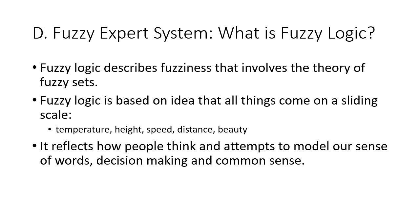First of all, let's describe what exactly is fuzzy logic. Fuzzy logic is a mathematical theory that describes fuzziness and involves the theory of fuzzy sets. Fuzzy logic is based on the idea that all things come on a sliding scale, meaning certain values can mean several things to several people. For example, temperature, height, speed, distance, and beauty are all ambiguous ideas that reflect how people think. By using fuzzy logic, we are basically attempting to model our sense of words, decision-making, and common sense in a way that can be computed.